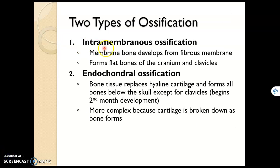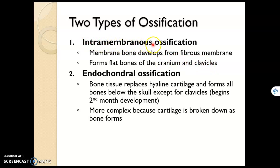There are two types of ossification: intramembranous and endochondral. We're going to go through both types briefly, pointing out the most important points, though it's good to read through and understand the entire process. Intramembranous ossification forms the flat bones of the cranium and clavicles only. All other bones in the skeleton go through endochondral ossification, where we use our hyaline cartilage skeleton and develop it into a bone skeleton.